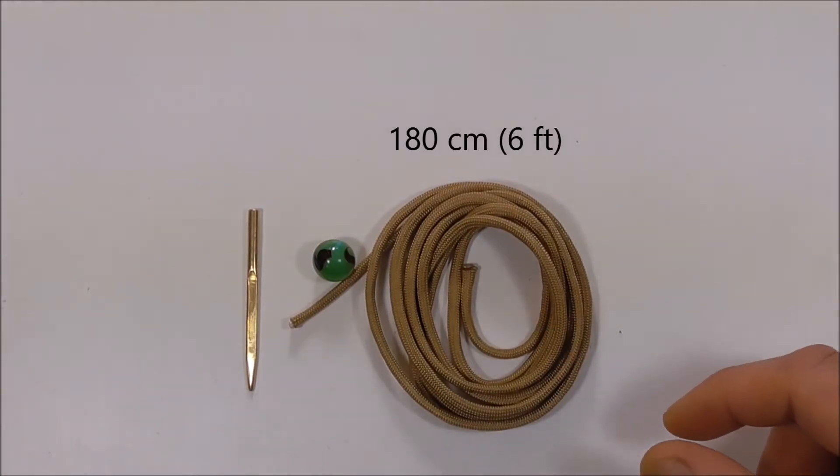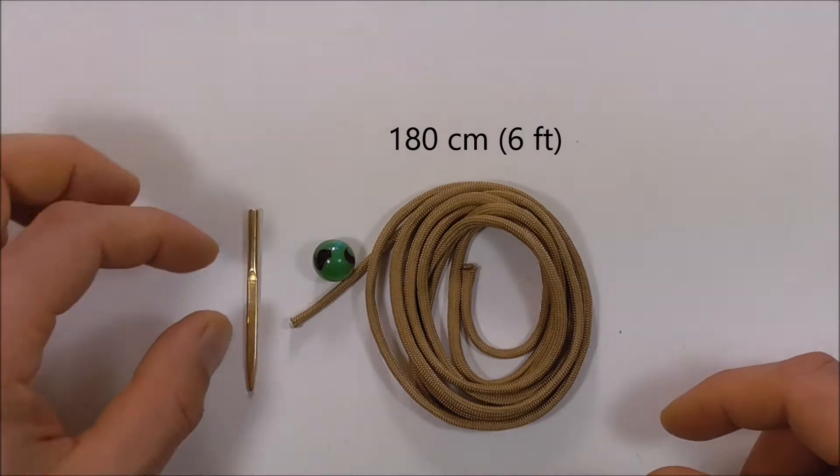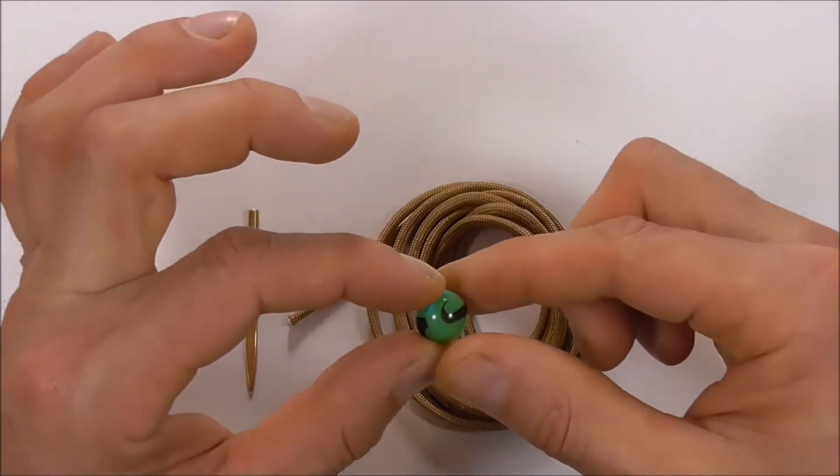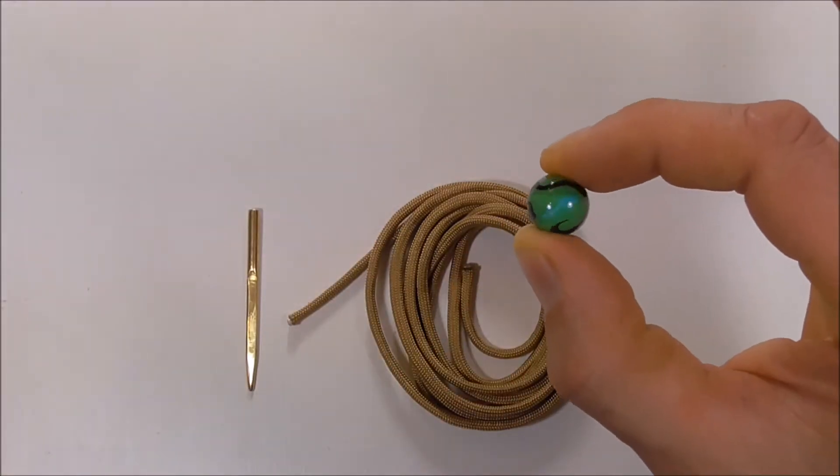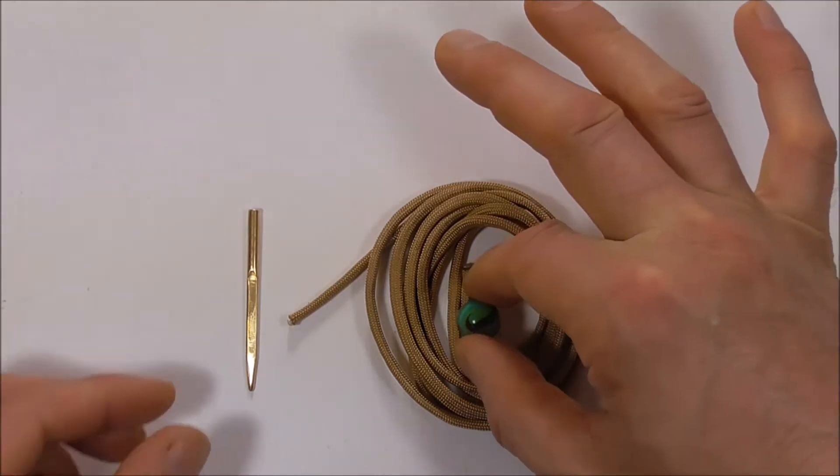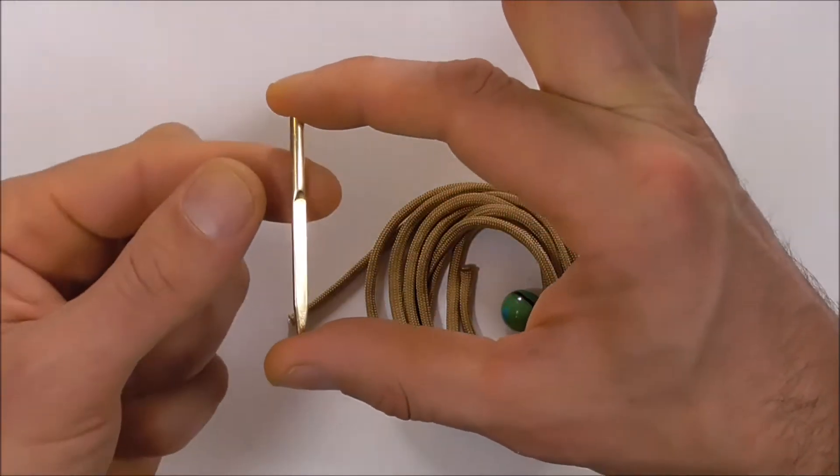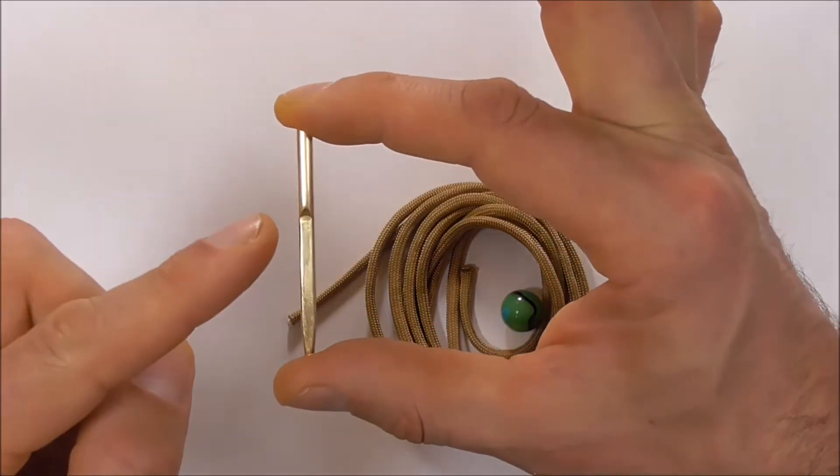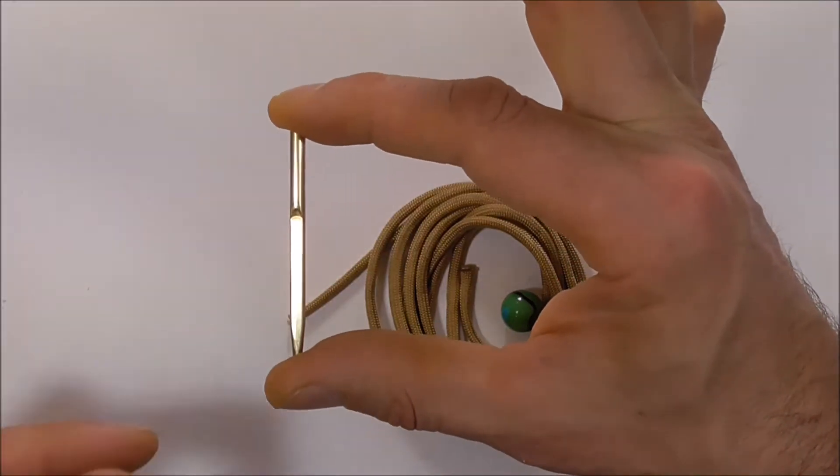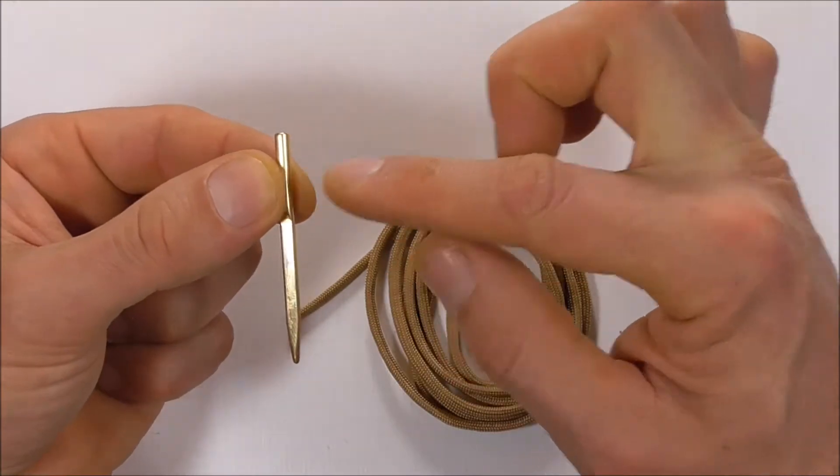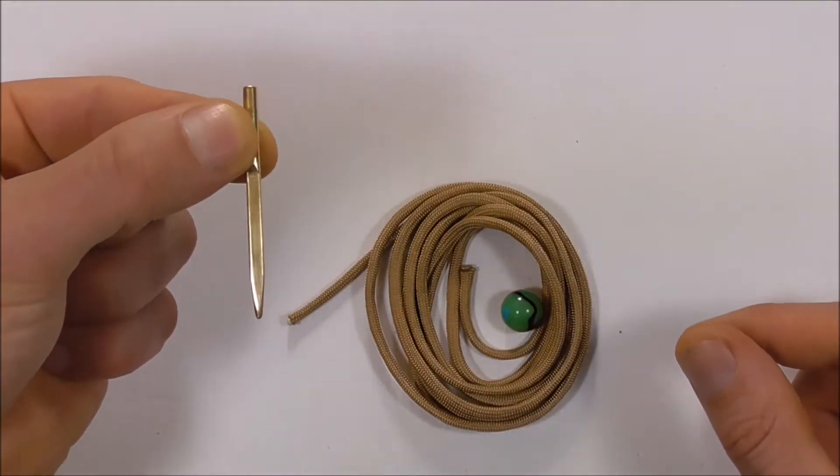I'm also going to need a marble for the core of the monkey's fist and I'm also going to use a paracord lacing needle. This one isn't required, so you can still do the project if you don't have one of these, but if you do, you can just get a little bit of a nicer finish on the end product.